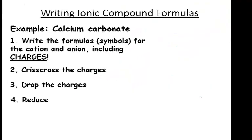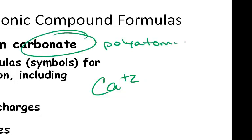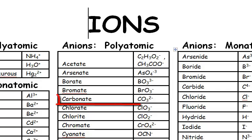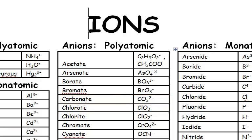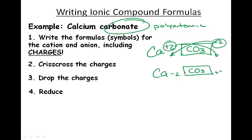Calcium carbonate: calcium is Ca positive two. Carbonate is a polyatomic ion — look it up. Under polyatomic anions starting with C, carbonate is CO₃ negative two. Protect CO₃ in a box with negative two outside. Crisscross: Ca with a negative two, CO₃ with a positive two. Drop the charges and reduce. We have a two-to-two ratio, which reduces to one-to-one, so no parentheses are needed — the formula is CaCO₃.